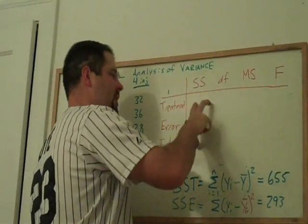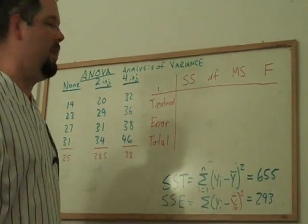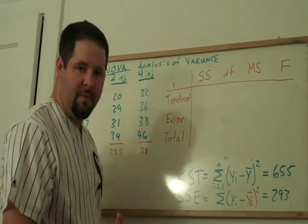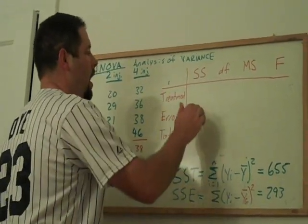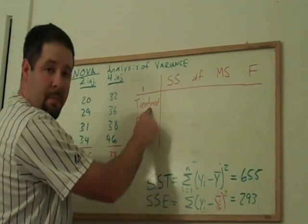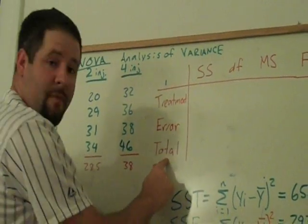I want to introduce you, with this example, to an ANOVA table. An ANOVA table breaks down our variability and some other features, which I'll introduce to you, into three groups, really. We've got the treatment variability, the error variability, and the total variability.